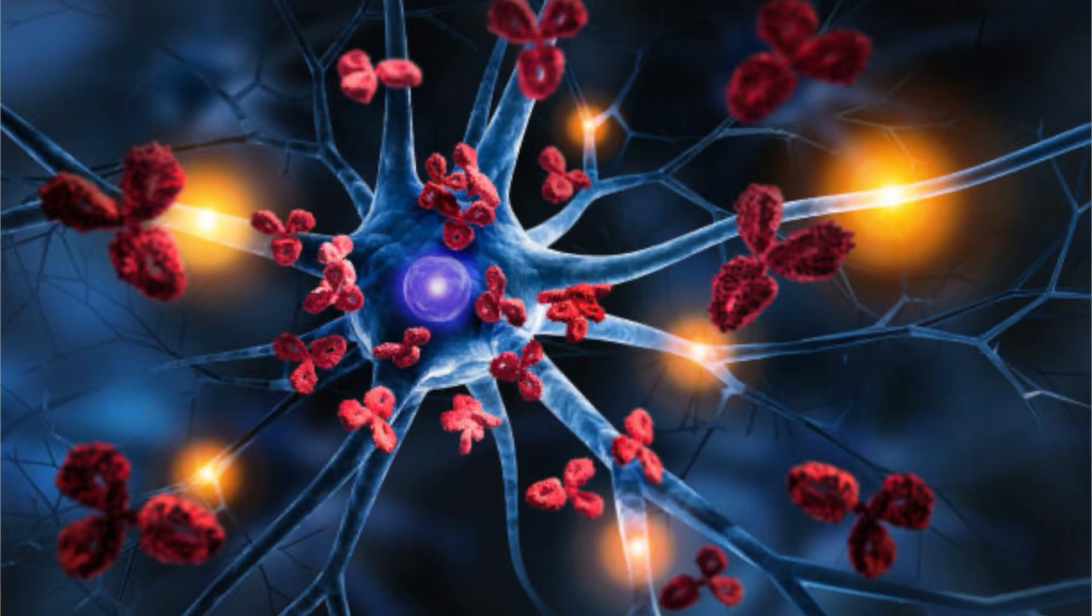In some cases, the body's immune system mistakenly attacks healthy brain cells, leading to encephalitis. This autoimmune response can be triggered by infections elsewhere in the body or may be idiopathic with no identifiable cause.